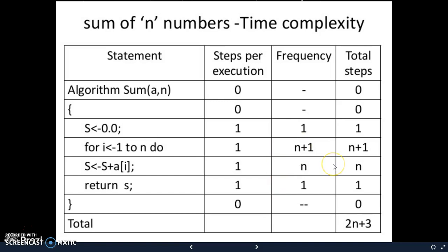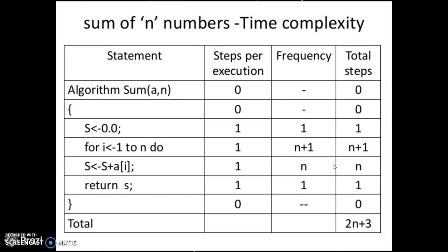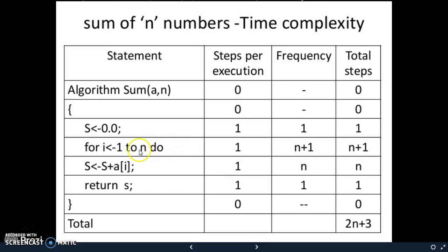The reason is simple. When i varies from one to n, there are n iterations - the condition will be true. And when the i value becomes n plus one, the condition becomes false. So basically there are n plus one comparisons: one to n it is true, that is n times, plus one time the condition becomes false. And as you can see, the statement s equals s plus a of i, whenever the condition is true, this is going to execute. So the condition is true for n times, so this statement executes n times.